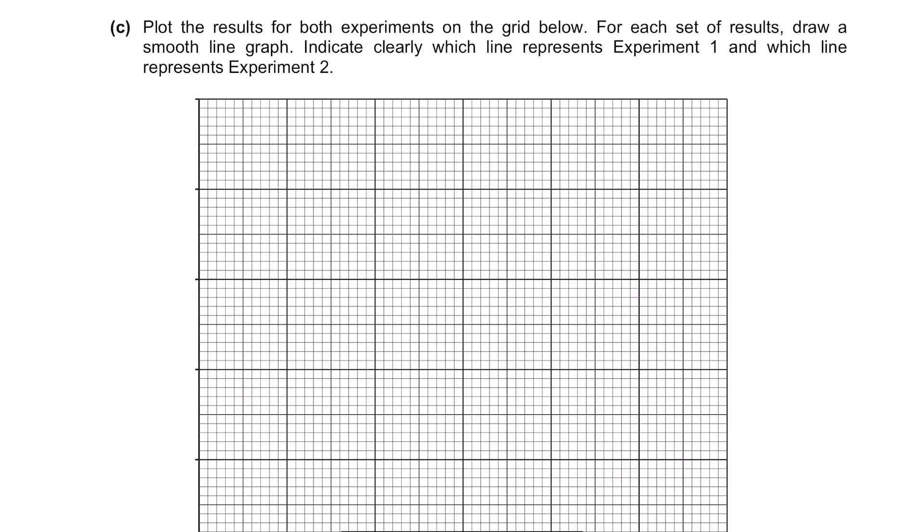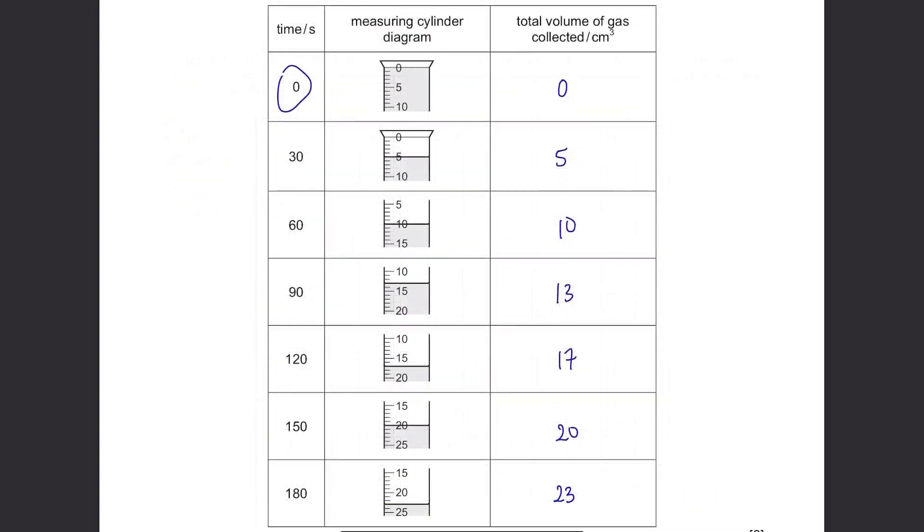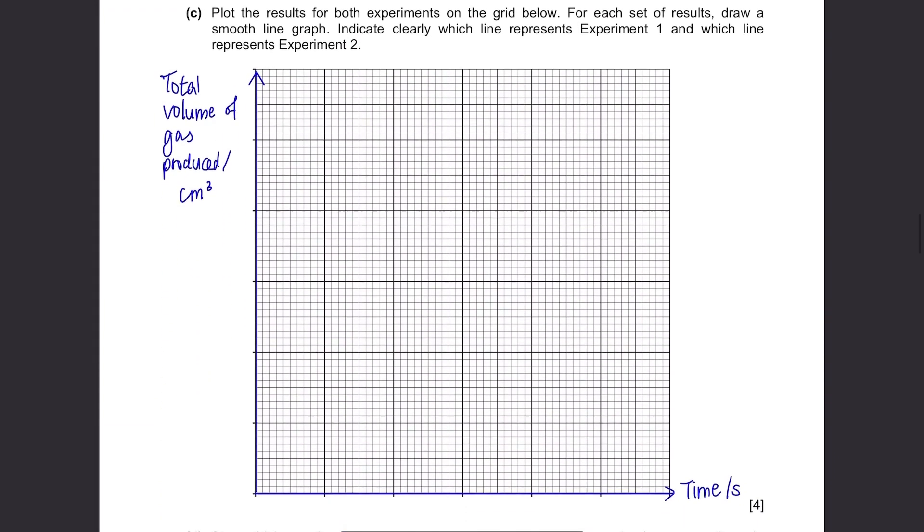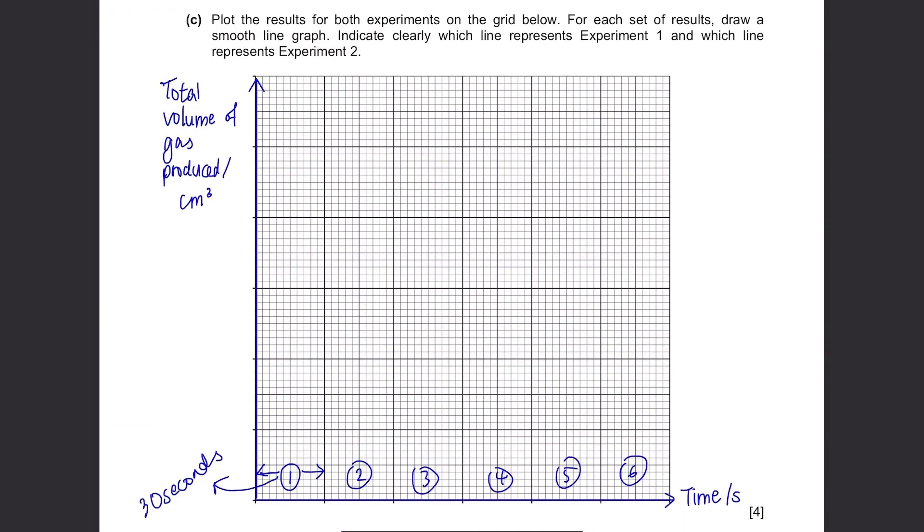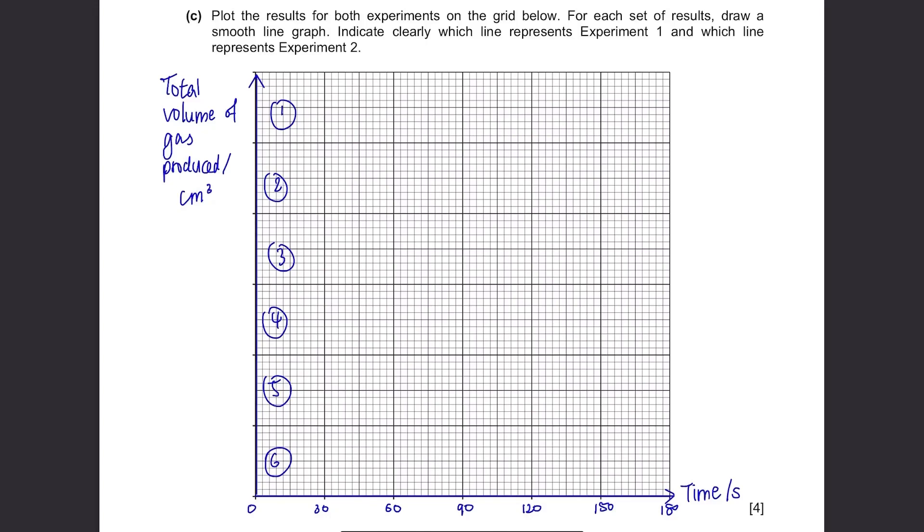Part C. Plot the results for both experiments on the grid below. For each set of results, draw a smooth line graph. Indicate clearly which line represents experiment 1 and which line represents experiment 2. The first thing we should do is to label and scale x and y-axis. X-axis should be the time in seconds as this is the independent variable. Y-axis should be the total volume of gas produced in cm³ since this is the dependent variable. Time is from 0 to 180 seconds and we have 6 boxes here. So 1 box stands for 30 seconds. For the volume, it should be at least from 0 to 49 and we have 6 boxes here. So let's make 1 box to stand for 10 cm³ having a range of 0 to 60 cm³.